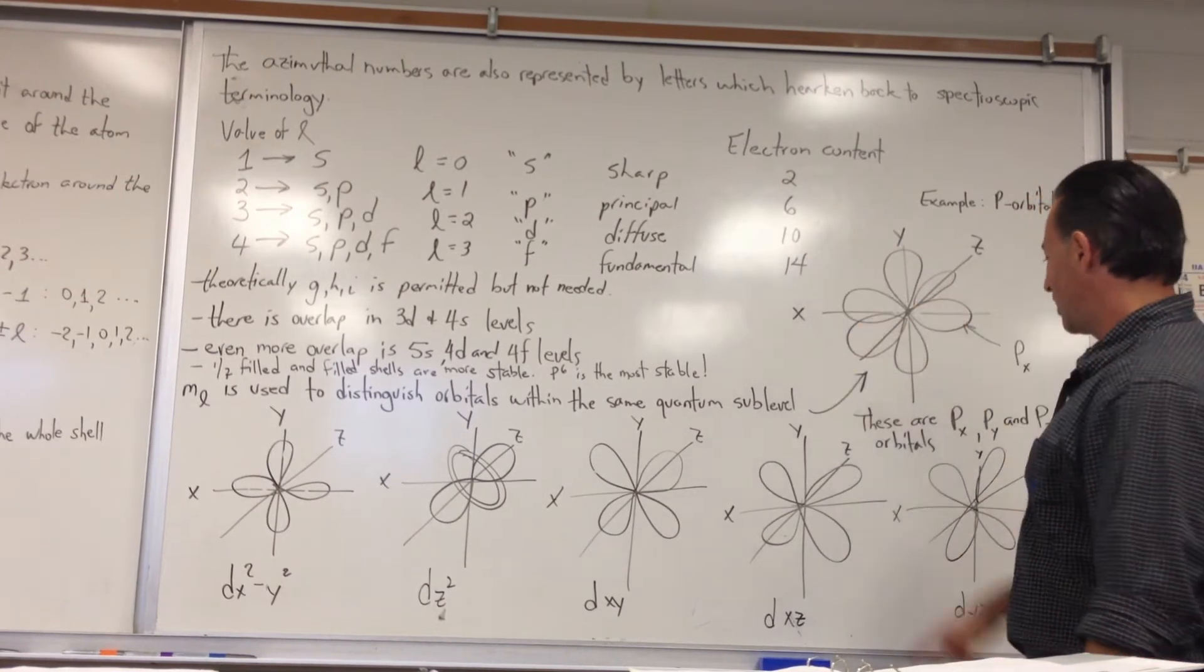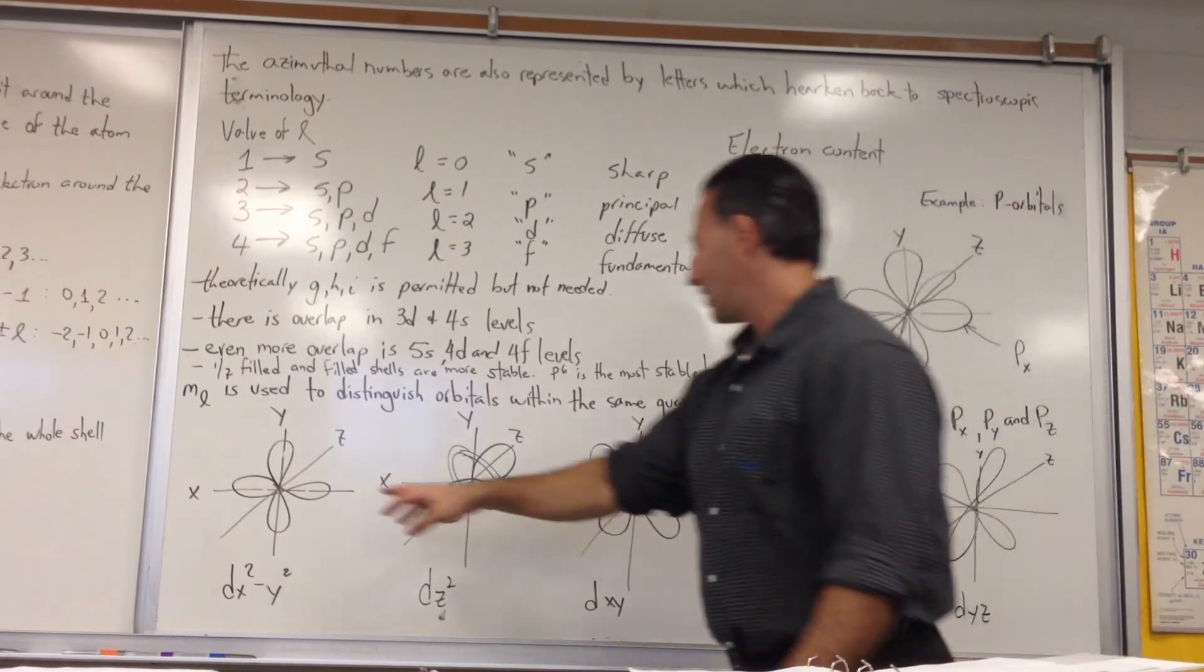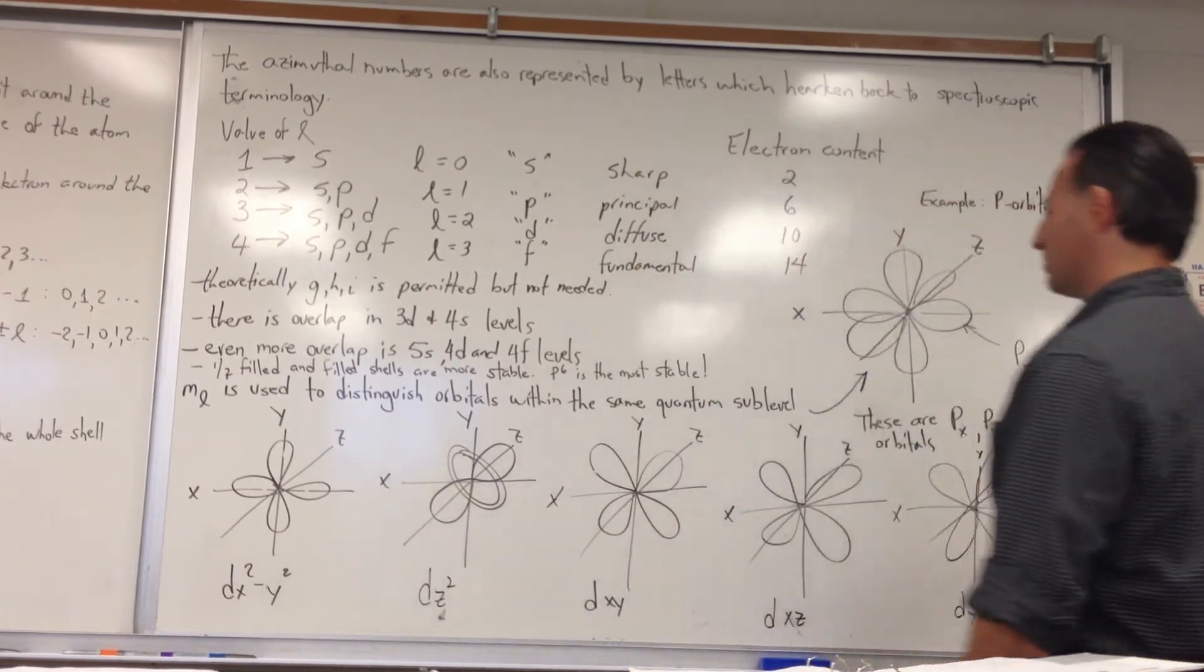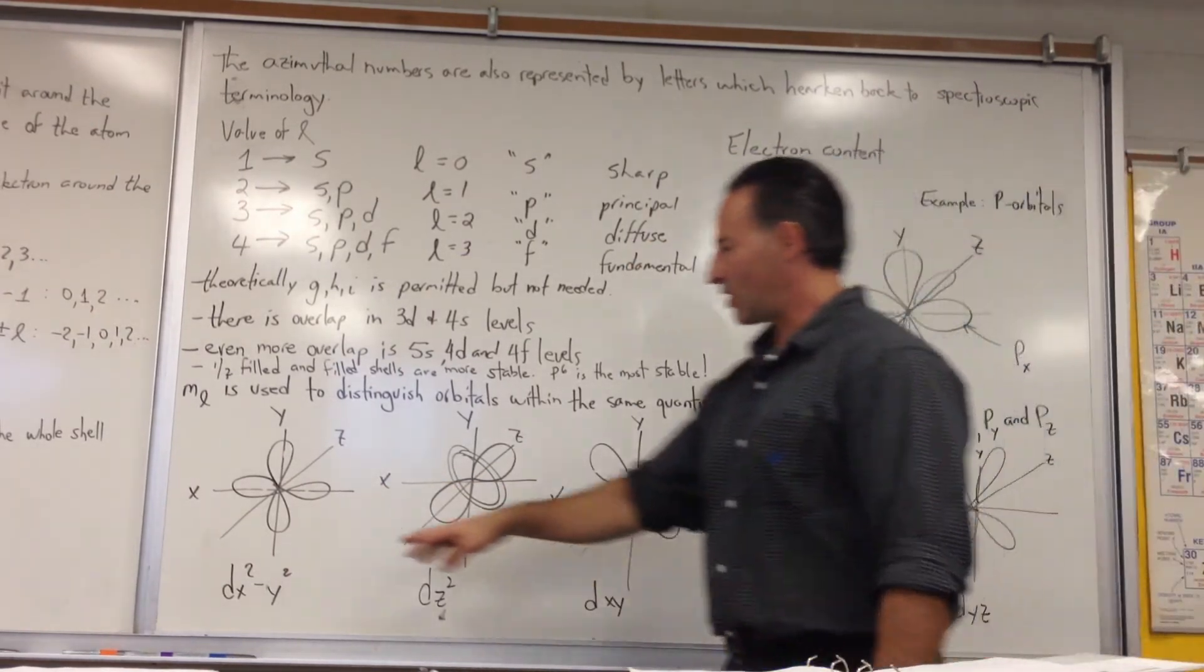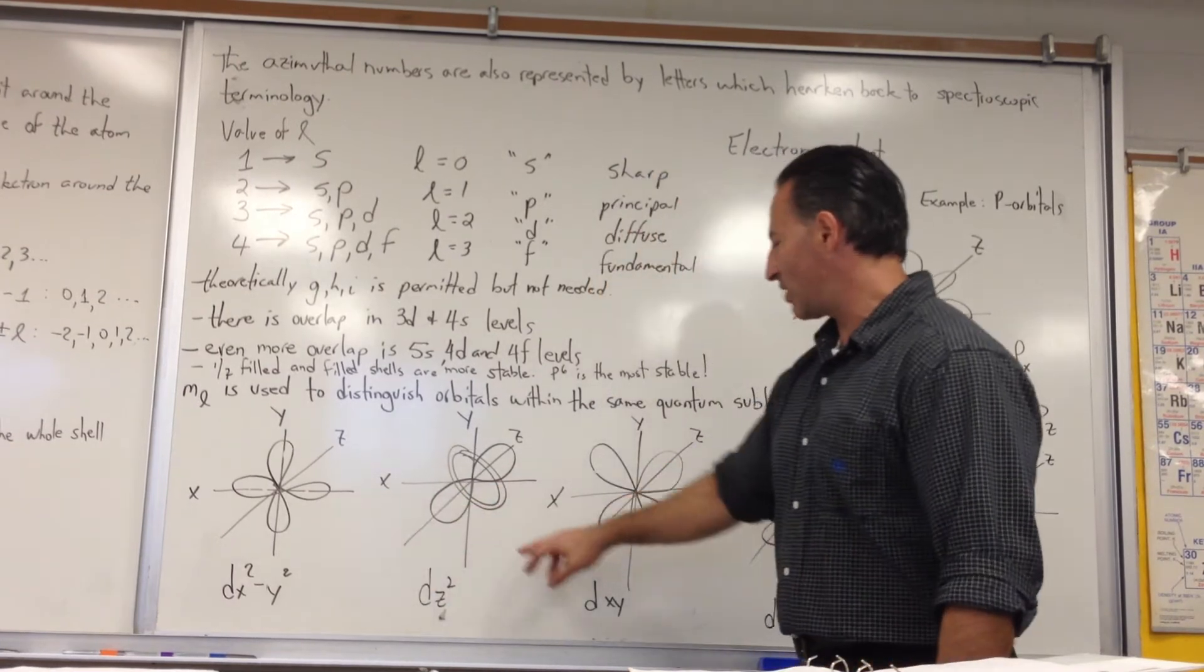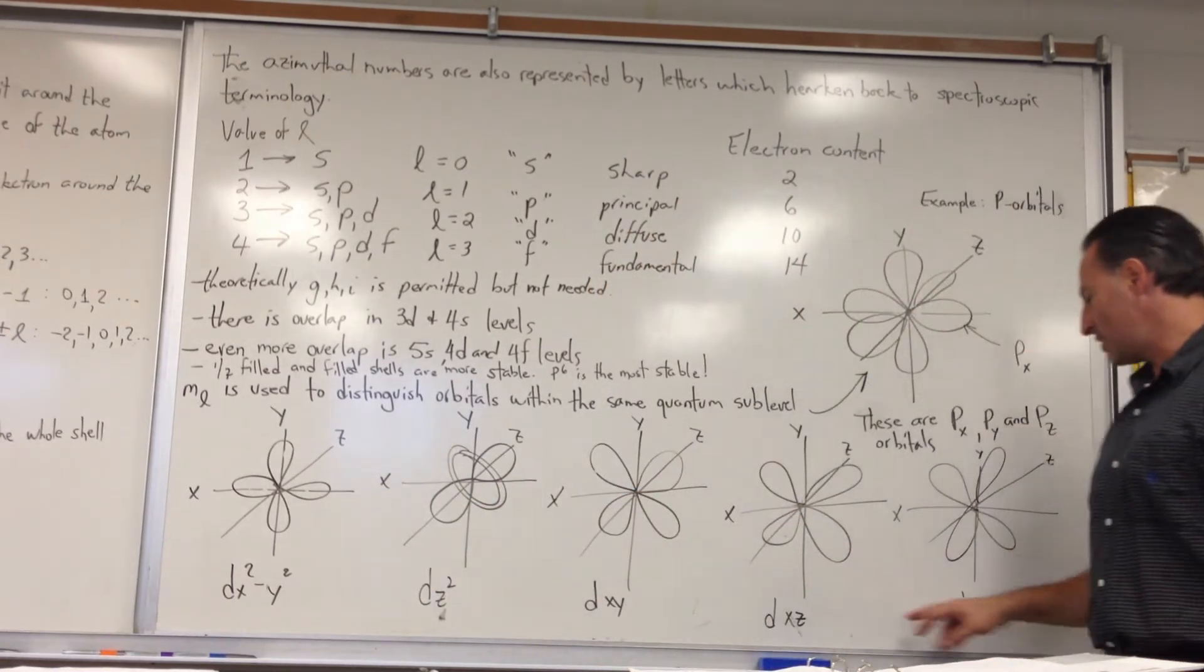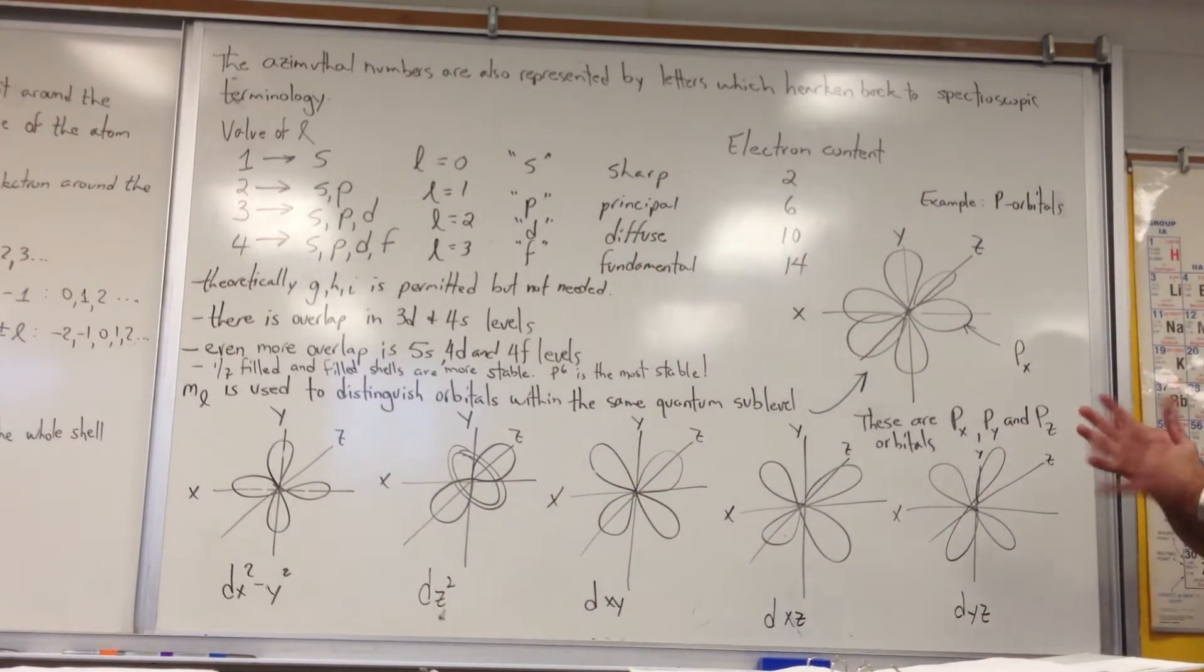D-shells, which I drew here, have five different possibilities. You see the DX squared minus Y squared orbital, the DZ squared, the DXY, the DXZ, and the DYZ. So they're each arranged in different geometries on the coordinate plane.